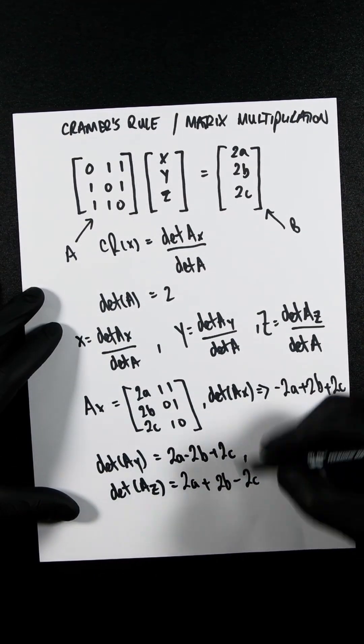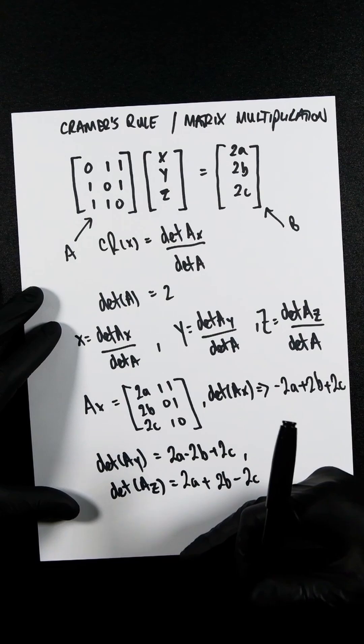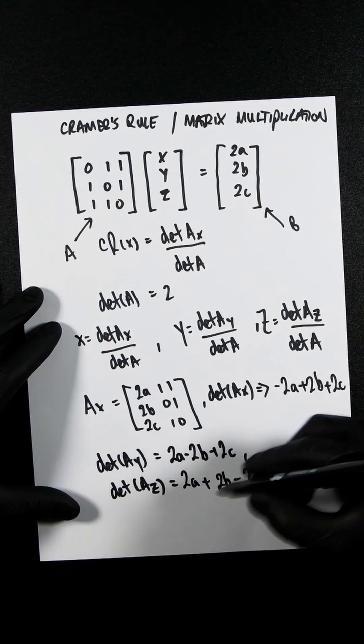We then apply Cramer's little rule here, divide all of these by the determinant of A, which is 2, which means that all of our 2s will be cancelled out for each one.